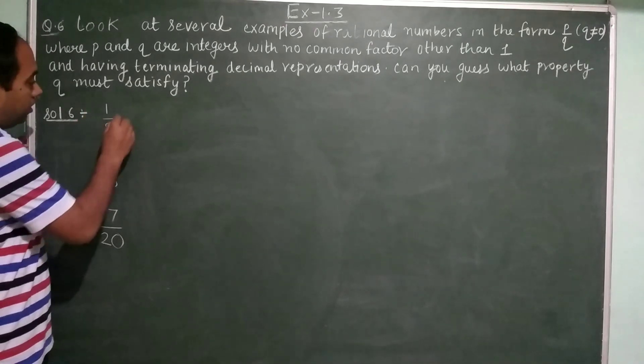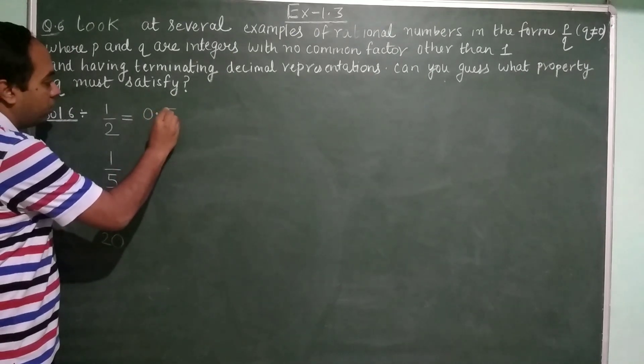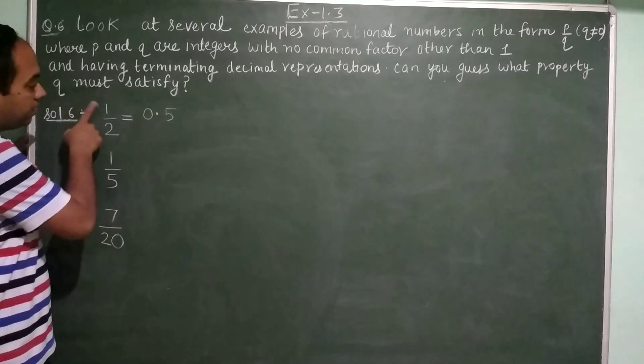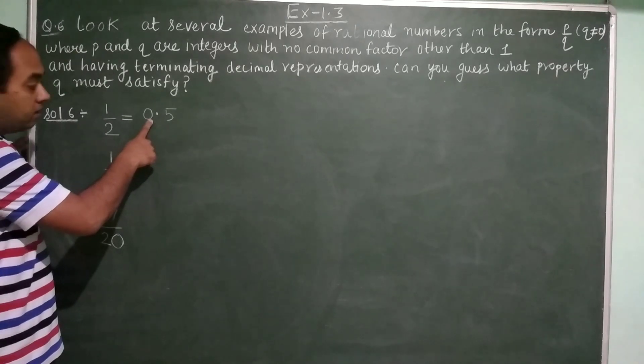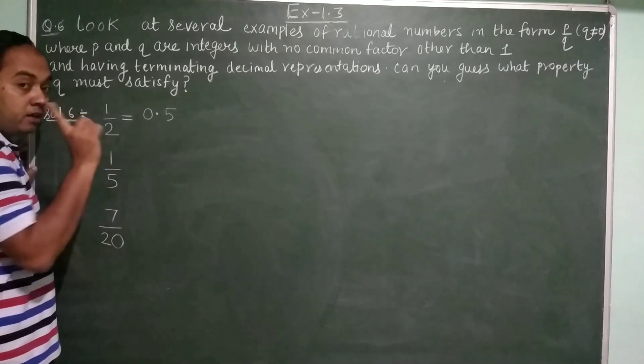Now 1 upon 2, when you will divide this, you are getting 0.5. This means this is a rational number having terminating decimal extension. Now what is the denominator over here? The denominator is containing prime factor 2.